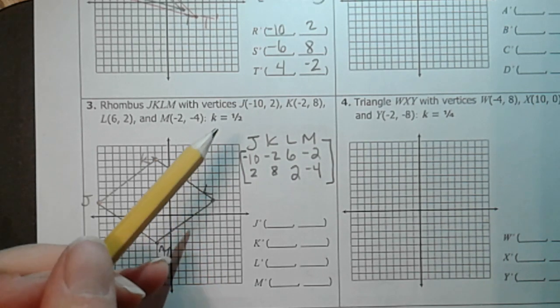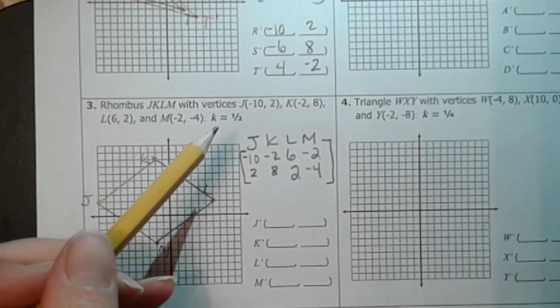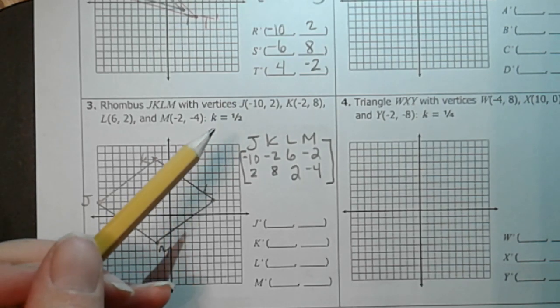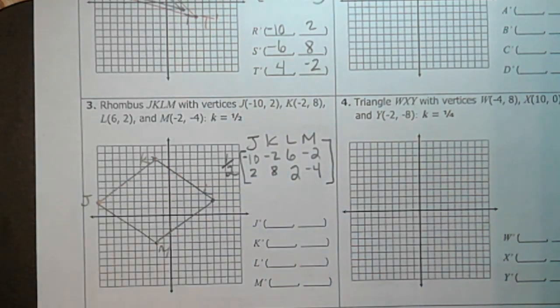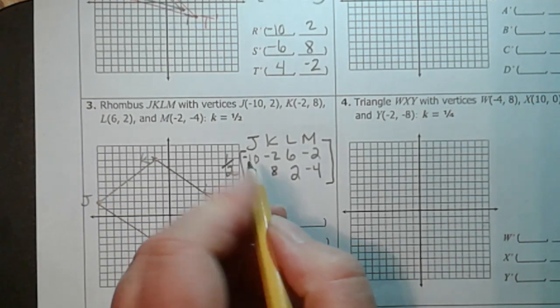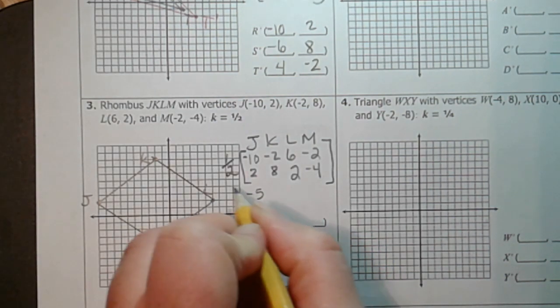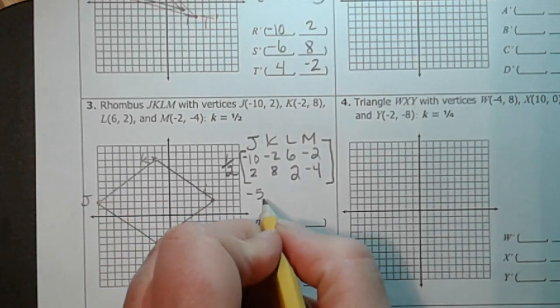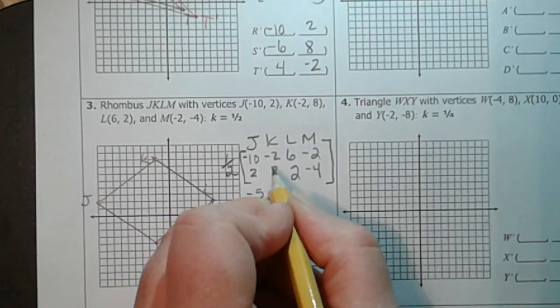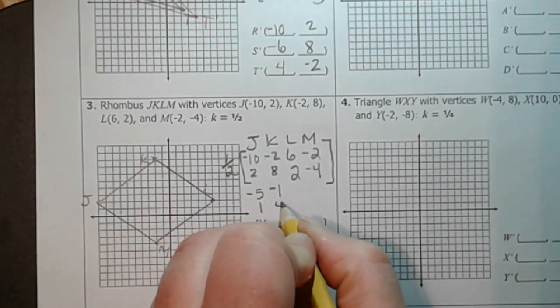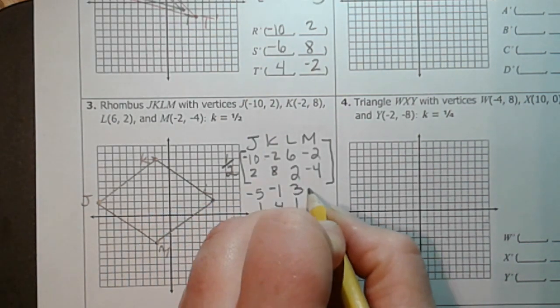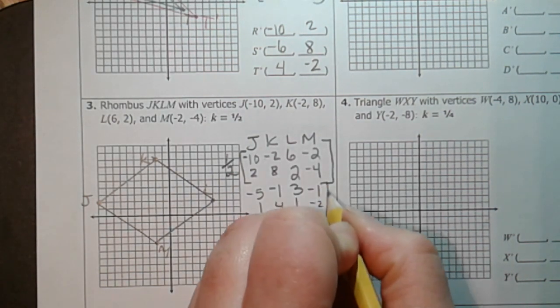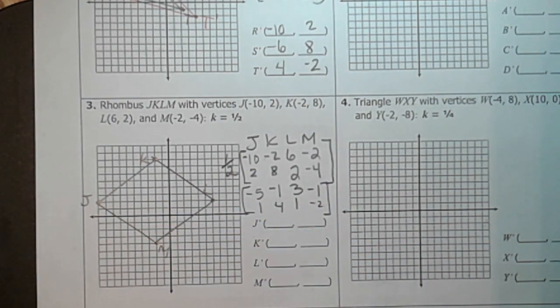And this time, we're going to have a scale factor of 1 half. So remember what that means. If you have a number that's in between 0 and 1 on the number line, then it's going to be a reduction. So this is going to make the rhombus smaller. We're going to take 1 half and multiply that by our matrix. 1 half times negative 10 is negative 5. 1 half times 2 is 1. 1 half times negative 2 is negative 1. 1 half times 8 is 4. 1 half times 6 is 3. 1 half times 2 is 1. 1 half times negative 2 is negative 1, and 1 half times negative 4 is negative 2. Basically, we just divided every number in there by 2.